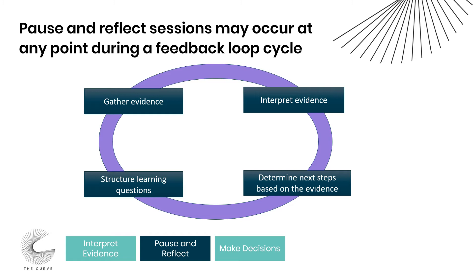Pause and reflect might be a useful concept to integrate at several points of a feedback loop within a responsive feedback cycle. It could be that you come together after you've structured your learning questions to make sure that you're on the right track to gather the right evidence. Often you might come together to interpret evidence as a group, or to make meaning out of findings. Most commonly, after you've gathered your initial evidence and interpreted findings, you gather stakeholders to determine next steps — how to change your program and how to structure your next feedback loop.